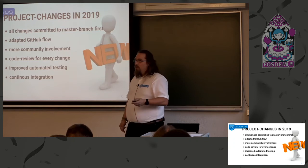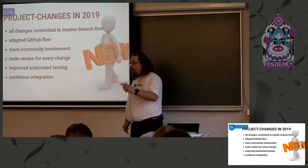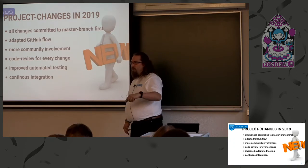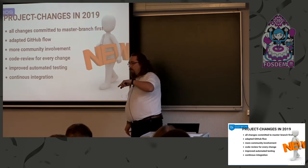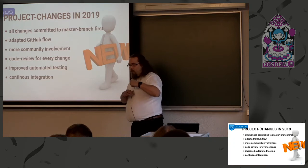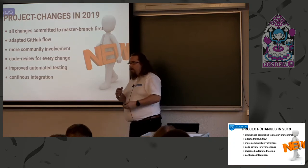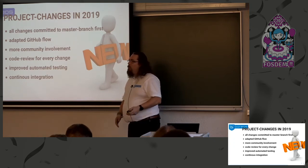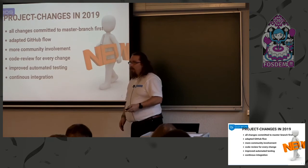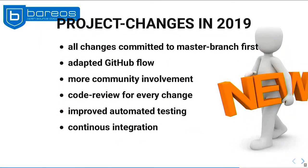We have upgraded our continuous integration system to work much faster, do better tests, and we now build every commit on every branch. So we know everything we do builds and works — for everything except the Unix platforms. Linux, FreeBSD and similar are all automatically built and tested. So for every change, even a pull request, we can just wait for it to build, take a look, and tell you — okay, that's a great idea but it doesn't work on FreeBSD, sorry.